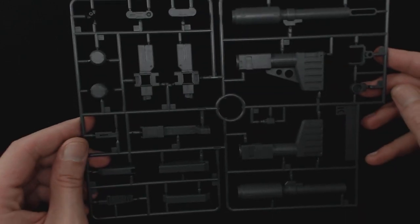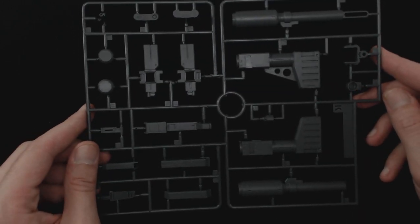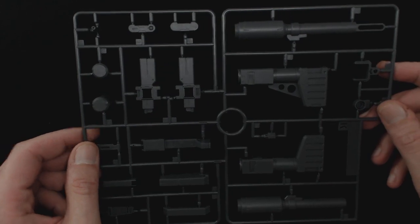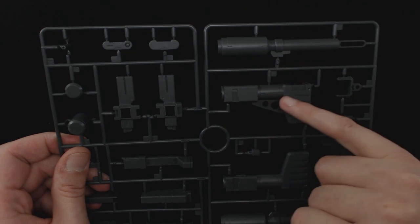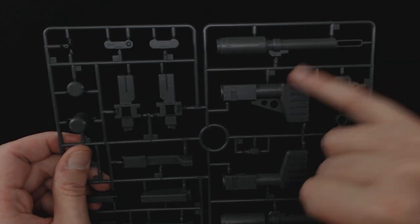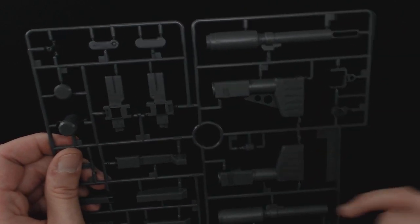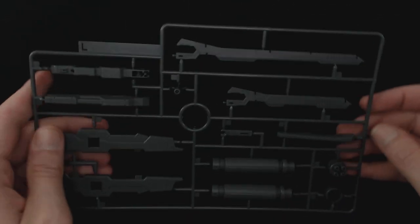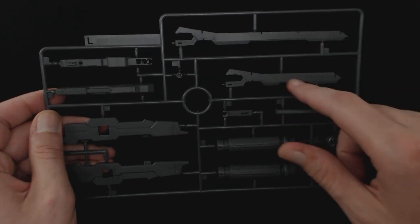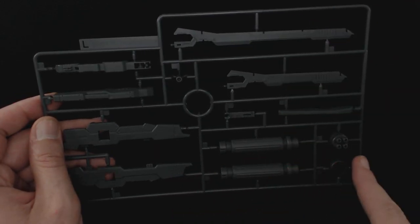Now on to runner K. This is going to be a little bit lighter than the others, though it's showing up pretty dark on camera. You get your bazooka or bazookas, not just the bazooka, all the gun parts that are on here. Runner L, part of the blades, guns, Gatling gun system.